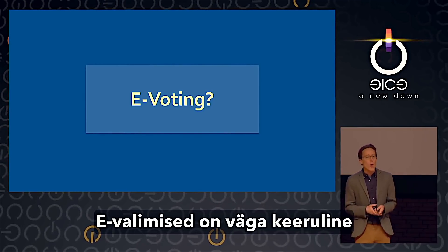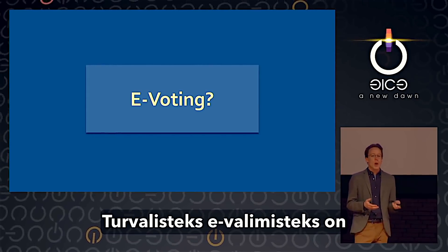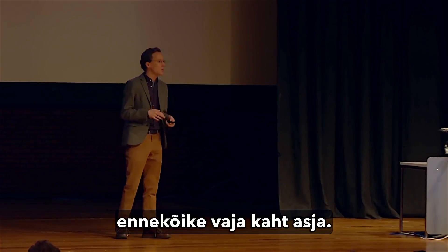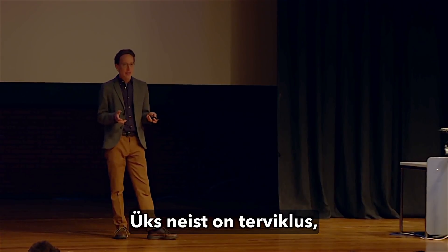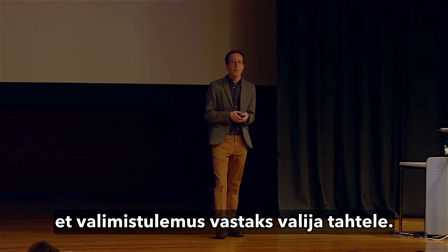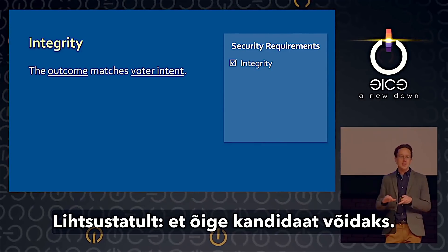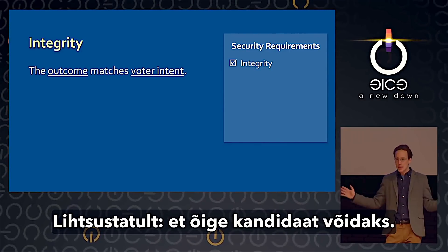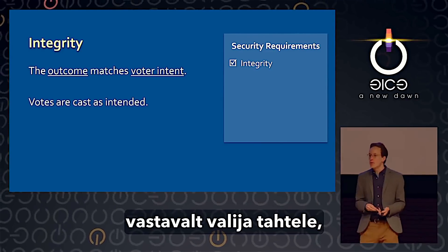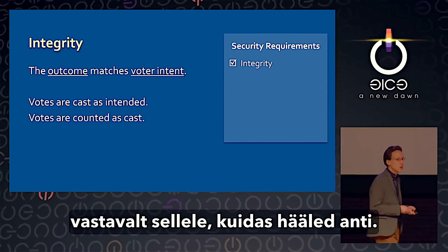E-voting raises some of the most difficult challenges in the field of computer security, and I see it as a motivating problem for advances in cryptography, systems construction, and usability. E-voting is a really hard security problem because of its unusual requirements. We need two things in a secure e-voting system above all else: one is integrity — meaning the outcome of the election matches the voters' intent, so that the right candidate wins.